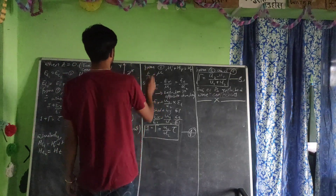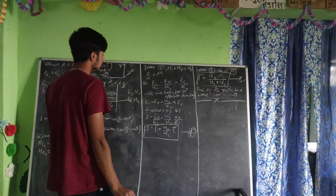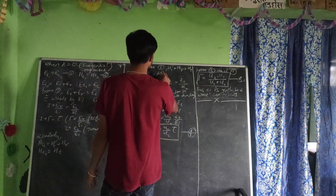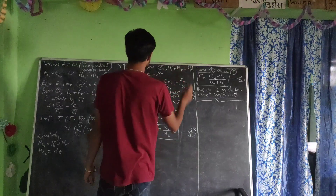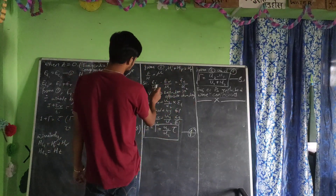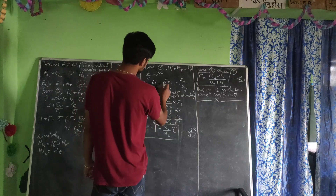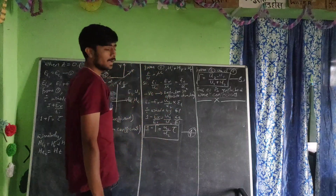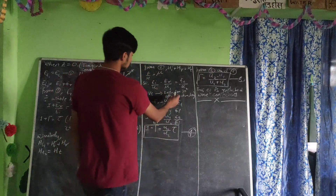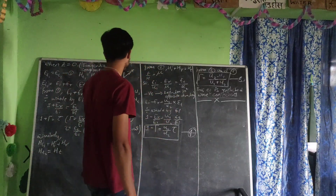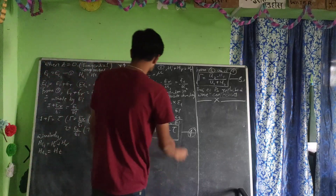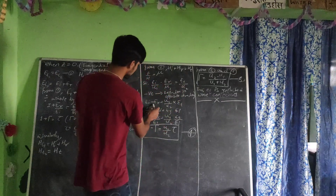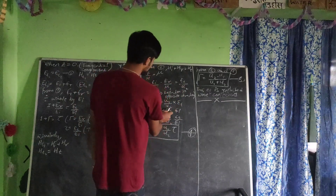We also know that the electric field divided by the magnetic field is denoted by eta. Substituting this into the above equation gives: E_i divided by eta_1 minus E_r divided by eta_1 equals E_t divided by eta_2. The negative sign appears because the reflection is taking place in the opposite direction, as mentioned earlier. Solving this equation, E_i minus E_r equals eta_1 divided by eta_2 times E_t. Dividing the whole equation by E_i gives: 1 minus E_r over E_i equals (eta_1 divided by eta_2) times E_t over E_i.